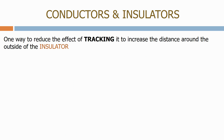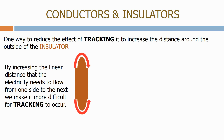One way to reduce the effect of tracking is to increase the distance around the outside of the insulator. By increasing the linear distance that the electricity needs to flow from one side to the next, we make it more difficult for tracking to occur.